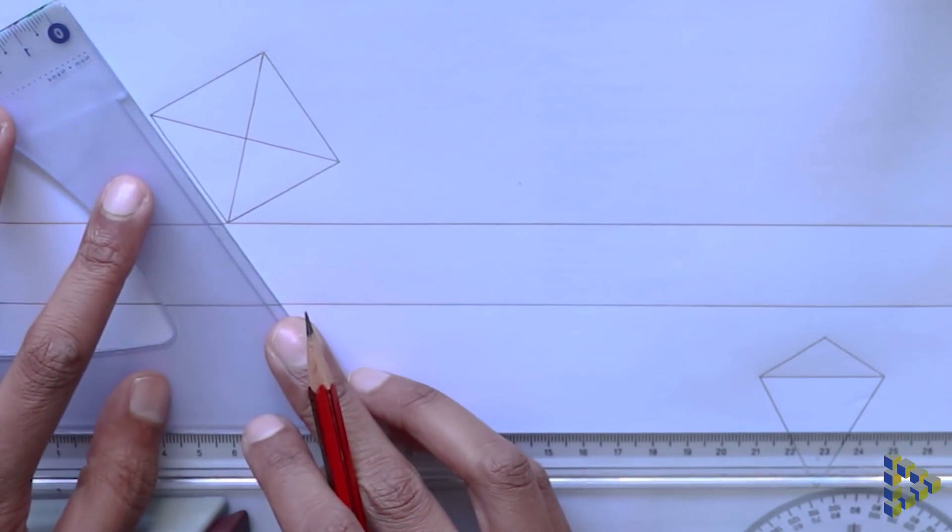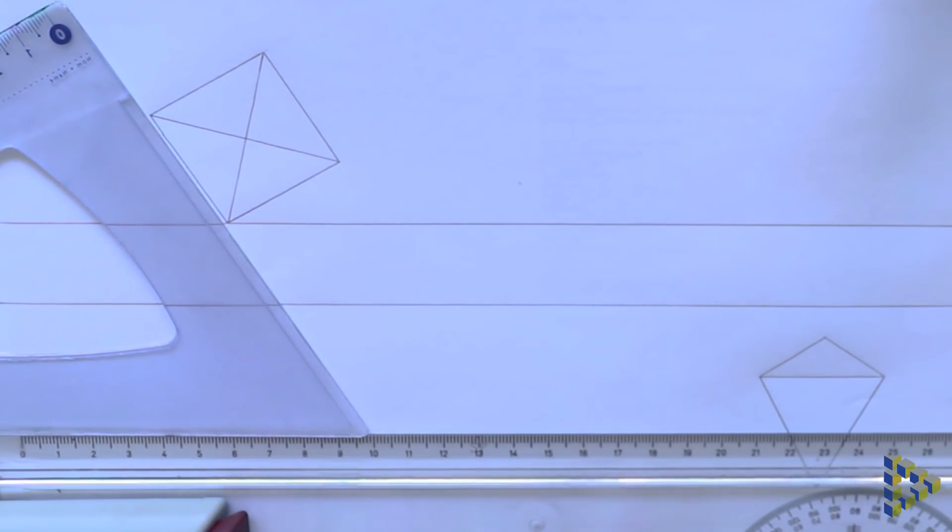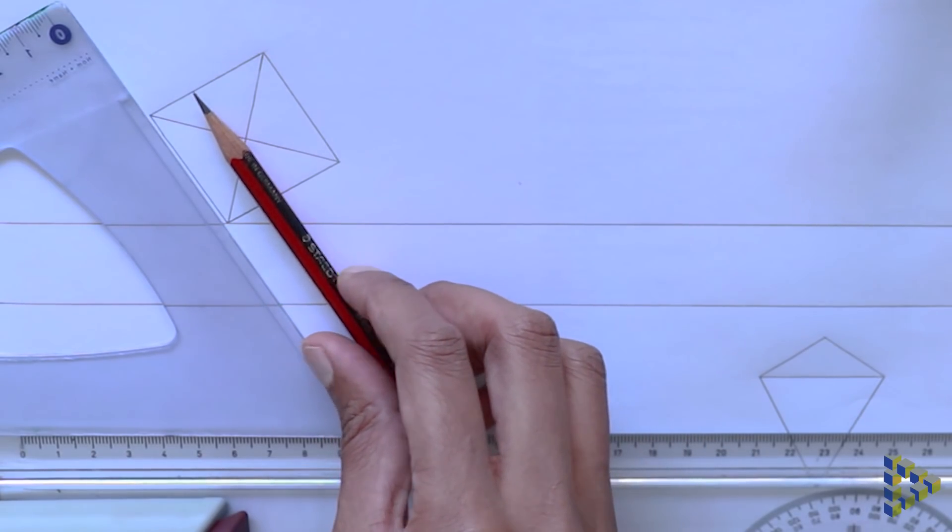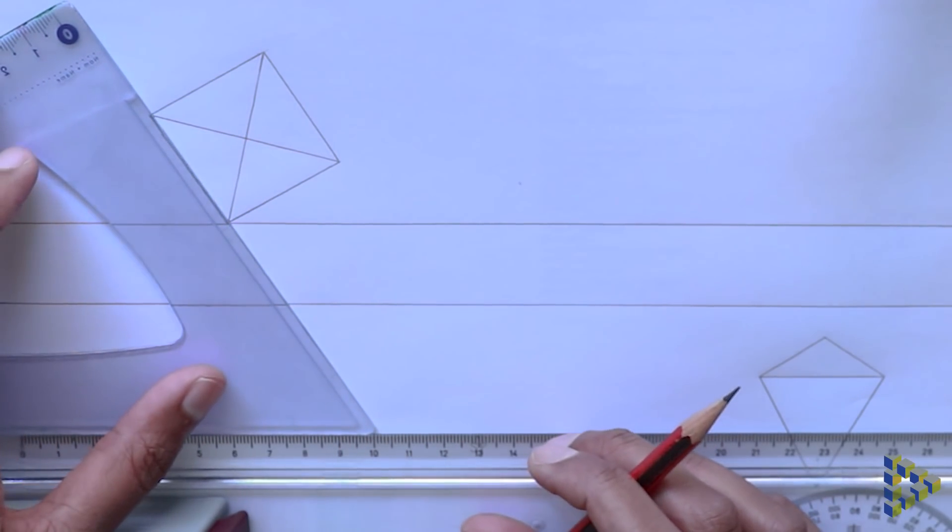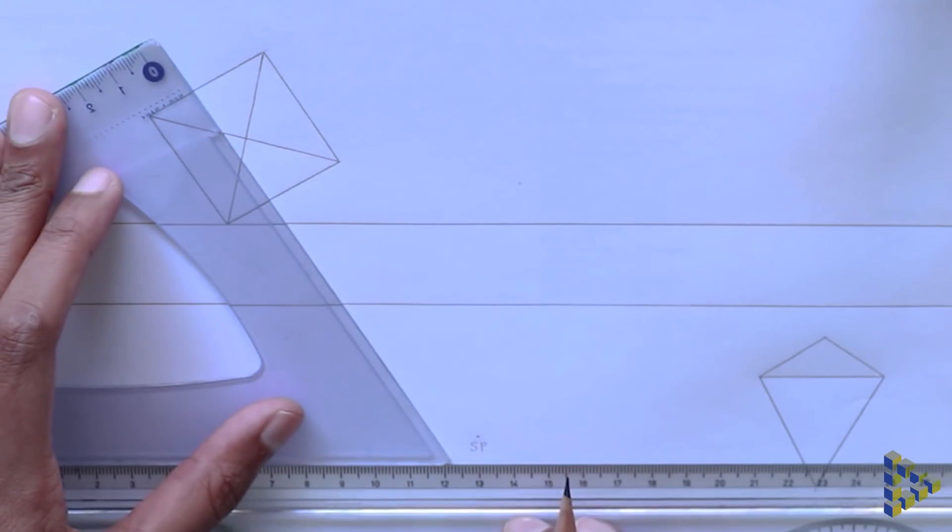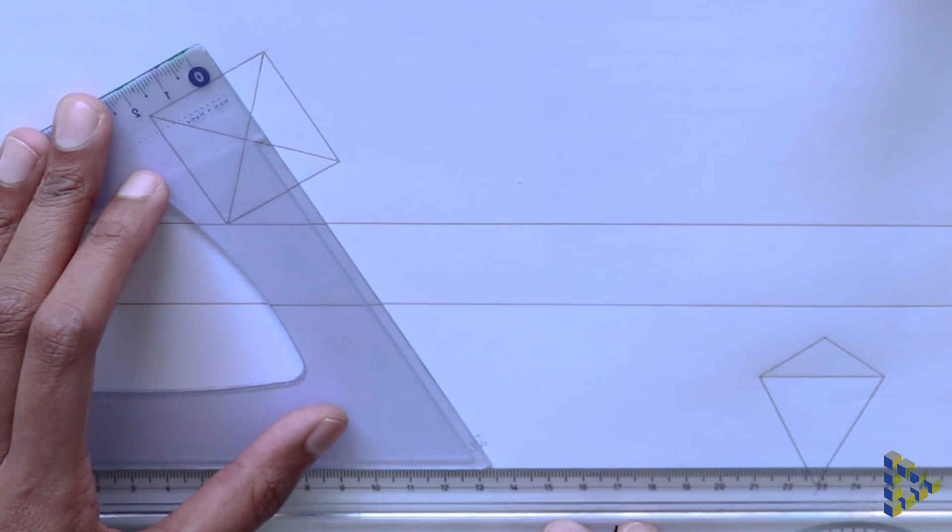I've redrawn these views to remind you how to get the vanishing points. To get the left side vanishing point rotate your set square to the angle of the left side adjacent edge, in this case a 60 degree angle.